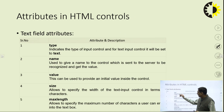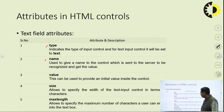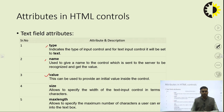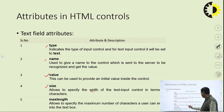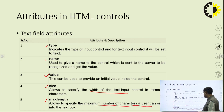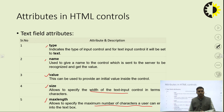Other than type and name, there are many other attributes available in the text field. One is the value attribute — with it we can initialize the value in the text box and extract information given by the user. Then there is the size attribute, which specifies the width of the text field. There is also the maxlength attribute, which specifies the maximum number of characters a user can enter. So depending on requirements, we can use many attributes.